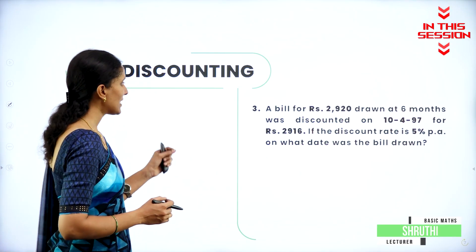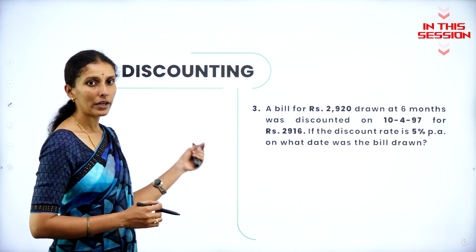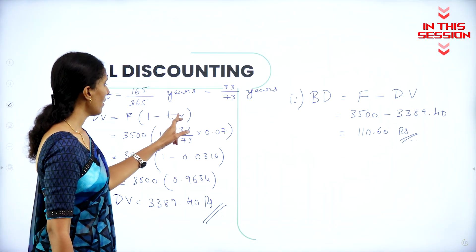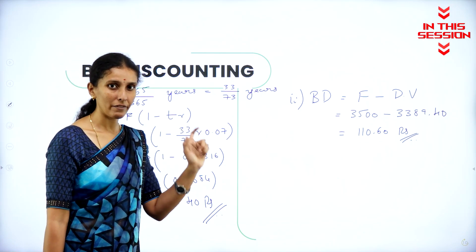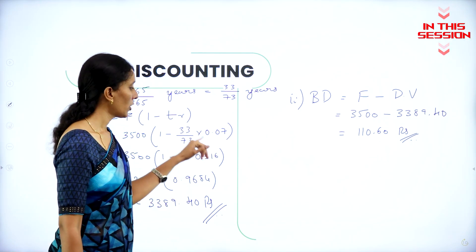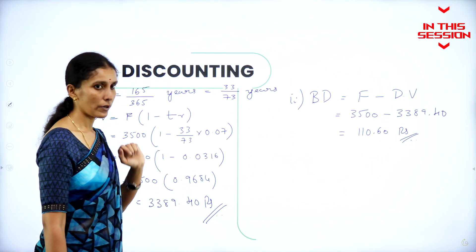First write down what they have given. Time is given, rate of interest is 0.07. When you divide 7 by 100, you will get it as 0.07.